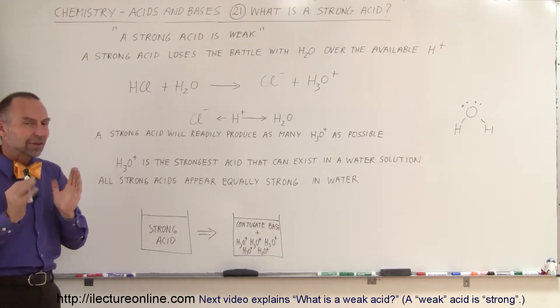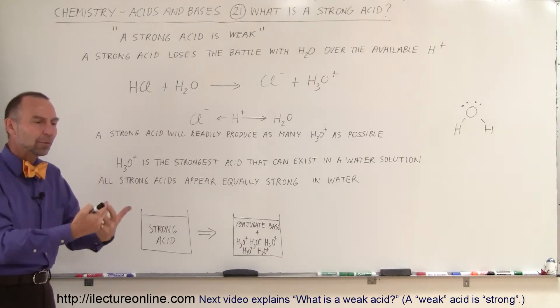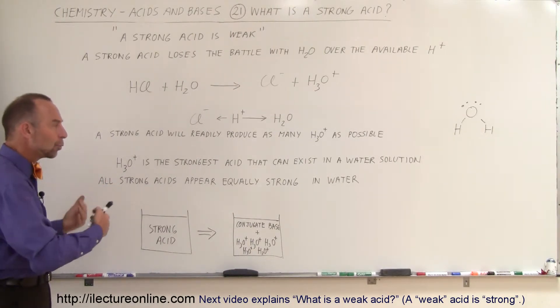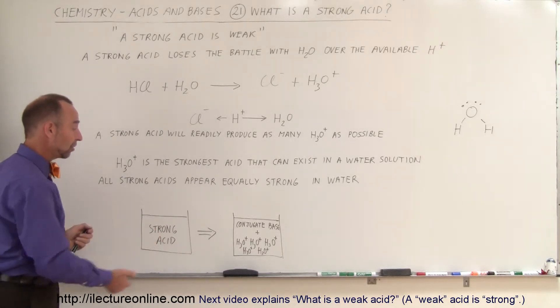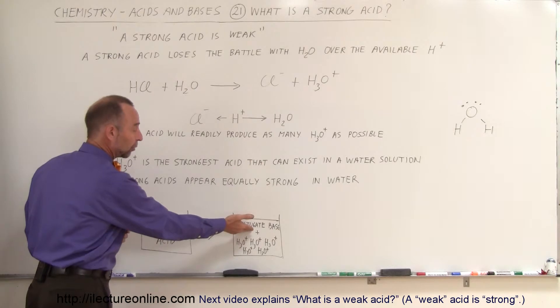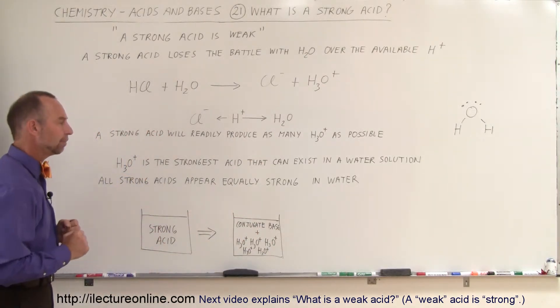So if you understand that concept, that's very important, because then you really understand how acids produce hydronium ions and what makes a strong acid. So if you have a strong acid, what is the result? You result with the conjugate base and lots and lots of hydronium ions. That makes it for a strong acid.